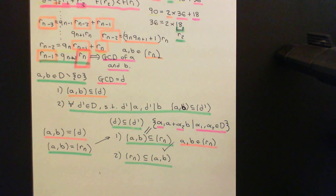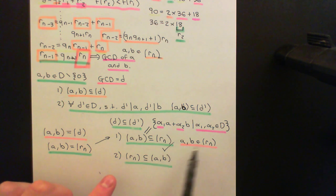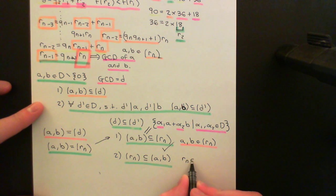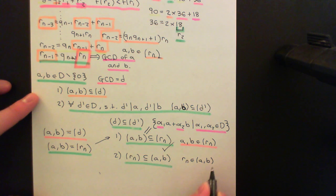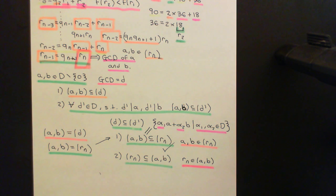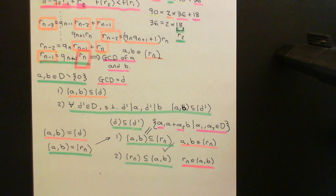Next, we want to prove that the principal ideal generated by Rn is contained within the ideal generated by A and B. By the same trick: if we can show that Rn itself is an element of the ideal generated by A and B, we're done, because the instant any element is in an ideal, its entire principal ideal must be contained within that ideal by closure under multiplication. So all we need to show is that Rn is in the ideal generated by A and B, meaning Rn equals α₁·A + α₂·B for some α₁, α₂.